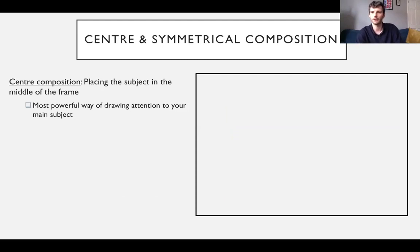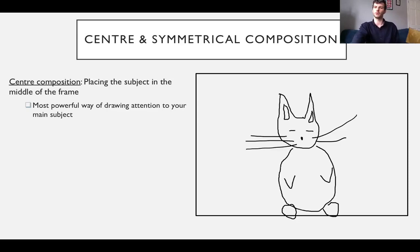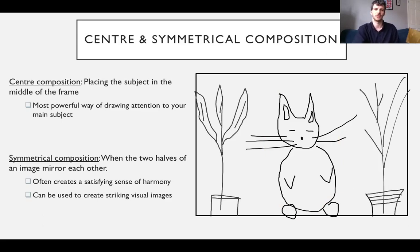Then we looked at other styles of composition - centre and symmetrical composition. Say your cat is extremely important to you and you want to draw the attention of the viewer to your cat as the main subject. What you can do is put the subject right in the centre. This is quite a powerful way of drawing the viewer's eye to whatever you want to draw their eye to. You can also arrange the image into a symmetrical composition.